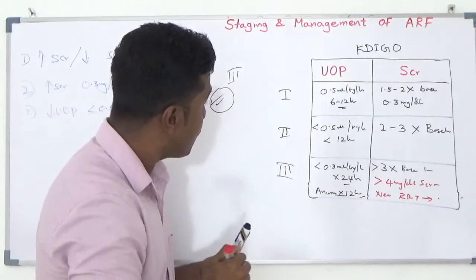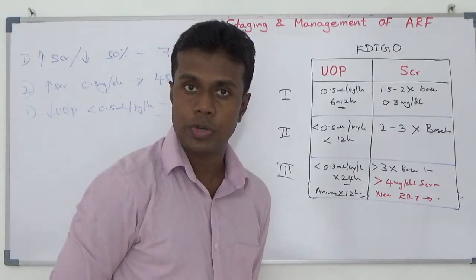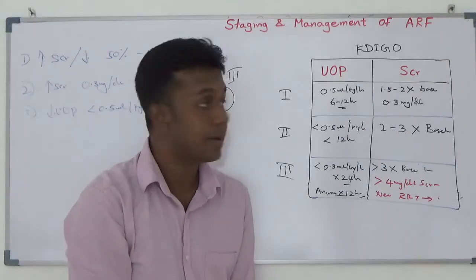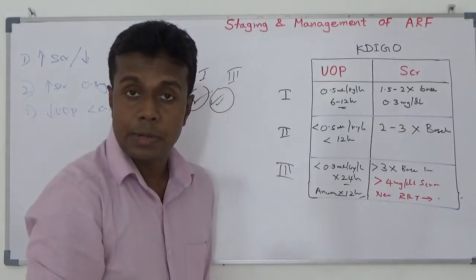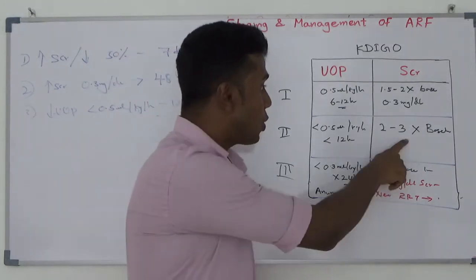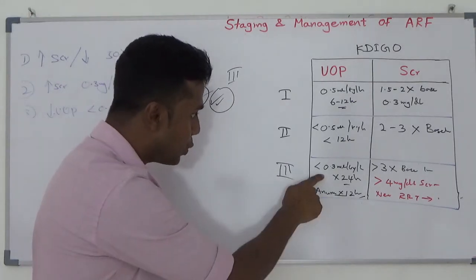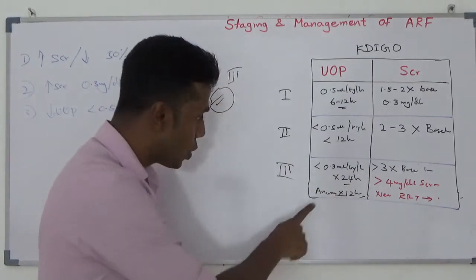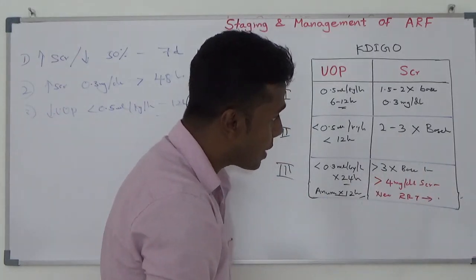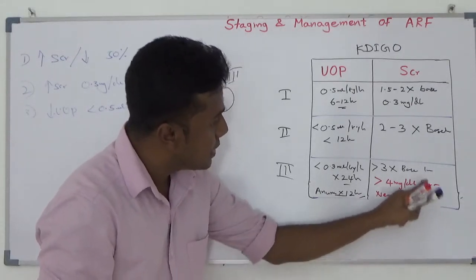To revise: if urine output is less than 0.5 ml per kg per hour for 6 to 12 hours, or serum creatinine 1.5 to 2 times from baseline, or elevation of more than 0.3 mg per deciliter — Stage 1. Urine output less than 0.5 ml per kg per hour for more than 12 hours, or serum creatinine 2 to 3 times from baseline — Stage 2. Urine output less than 0.3 ml per kg per hour for 24 hours, or anuria for 12 hours, or serum creatinine 3 times from baseline, or more than 4 mg per deciliter, or patient needs renal replacement therapy — Stage 3.